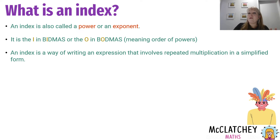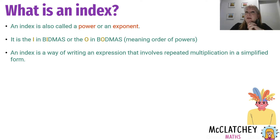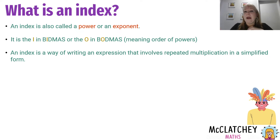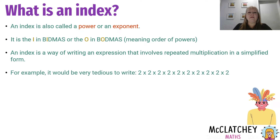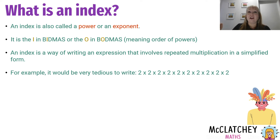An index is a way of writing an expression that involves repeated multiplication of basically the same number. Indices can be presented using numbers and they can also be presented using letters, so it's a simpler way of expressing something. For example, if I had to write two times two times two times two many, many times, that would be extremely tedious, boring, annoying, and time consuming to have to write that down over and over again.